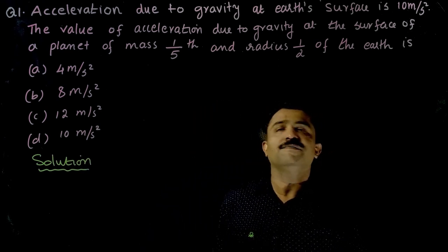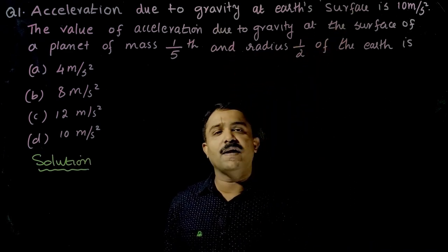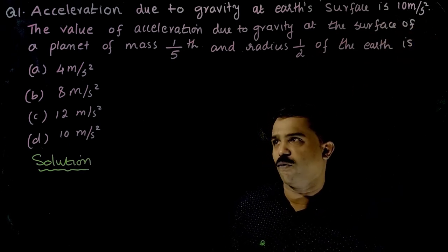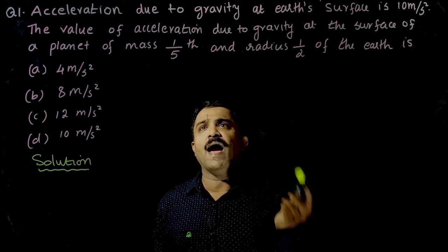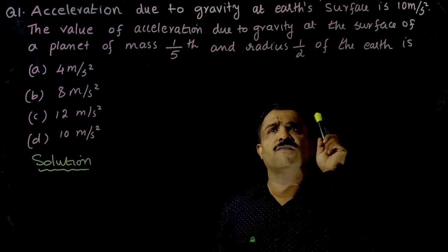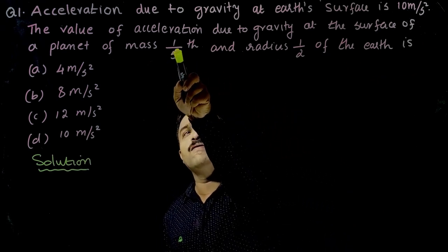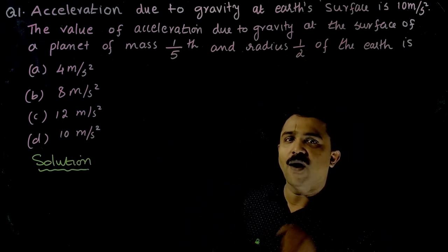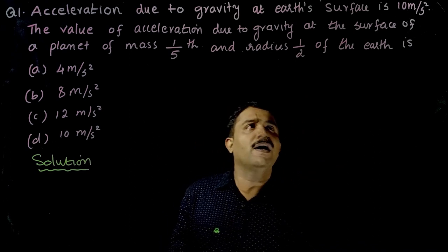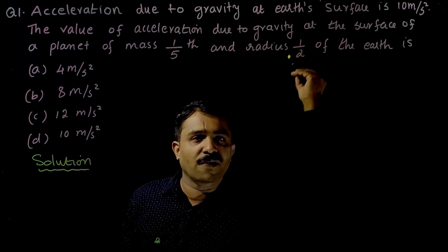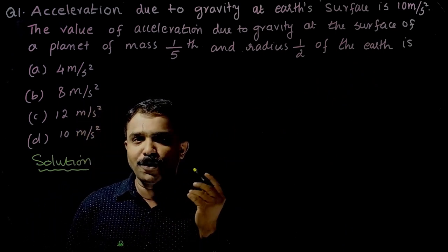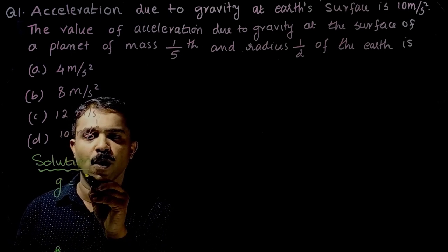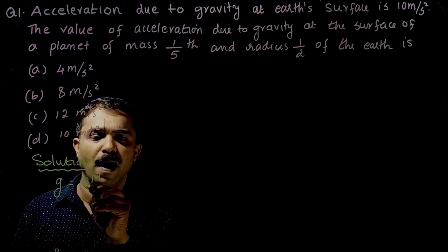Here, the acceleration due to gravity at the surface of the earth is given as 10 m/s². We have to find the acceleration due to gravity at the surface of a planet whose mass is 1/5th and radius half of the earth. The expression for acceleration due to gravity at the surface is g = GM/R².